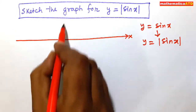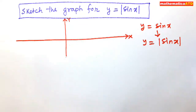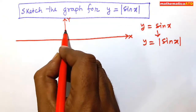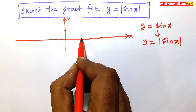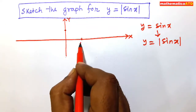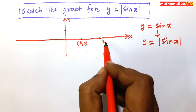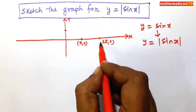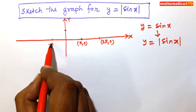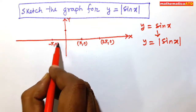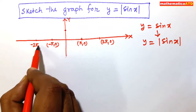This is the x-axis and this one is the y-axis. Key points: this is (0,1), this point is (π, 0), this is (2π, 0), this one is (-π, 0), and this is (-2π, 0).